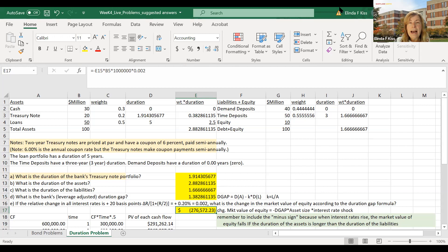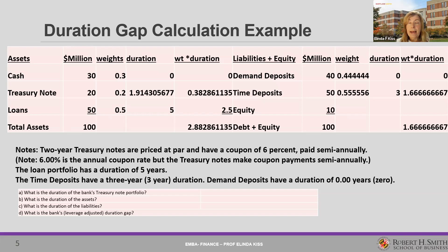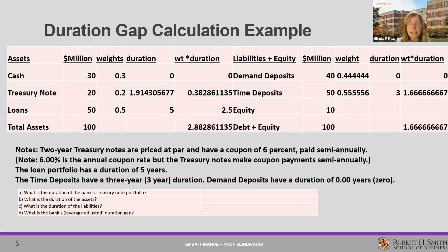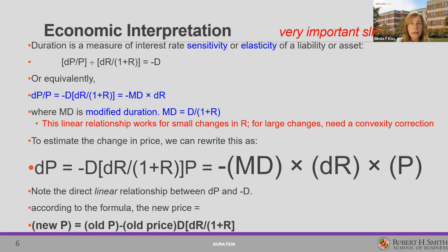Now you know how to calculate the duration of a security, the weighted average duration of assets, and the weighted average duration of liabilities. Put them together to get a duration gap, and if we have an interest rate shock, we can measure the change in the market value of the portfolio. This is what I would present at the Asset Liability Committee to show interest rate risk exposure. This last slide discusses the economic interpretation of duration, expressed linearly with modified duration. Thank you very much for your attention.